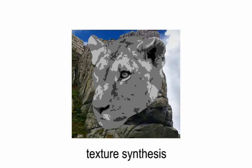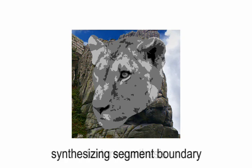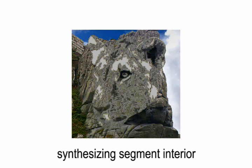Guided by the optimal luminance of segments, a two-faced texture synthesis dresses up the foreground using texture detail from the background. The process starts with synthesizing the segment boundary, then we fill up the interior of each segment and obtain the final result.